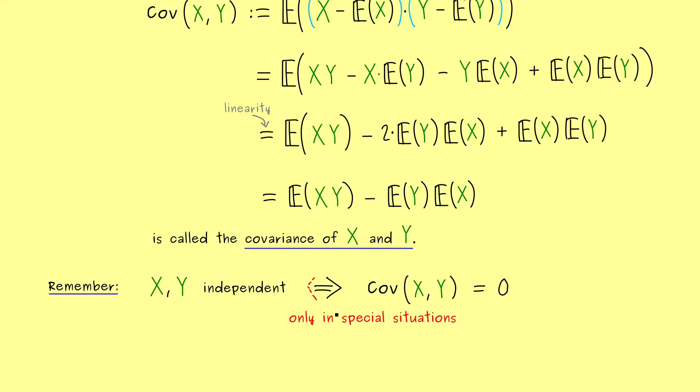For example, in the case that both random variables are normally distributed. This is important to note, because often the covariance is easy to calculate, but the independence is hard to show.